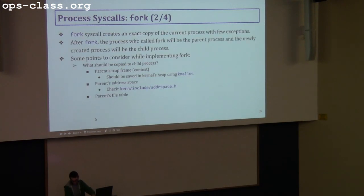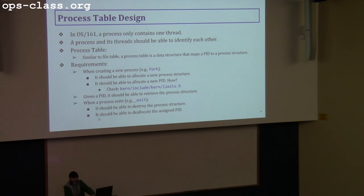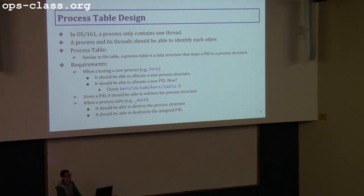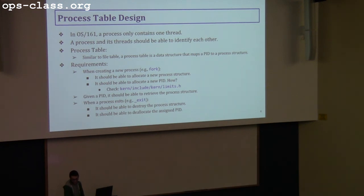For PID allocation: the minimum PID should start from 2, as PIDs 0 and 1 are reserved for the kernel. Use an increasing counter for your PIDs. This is the recommended approach — one good way to handle PID allocation.